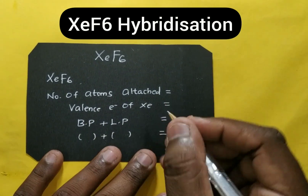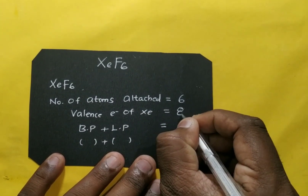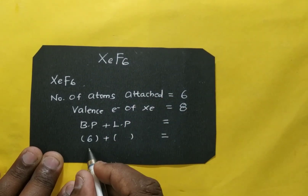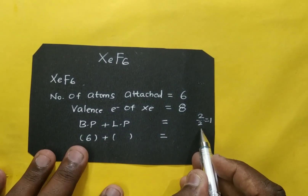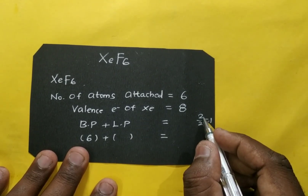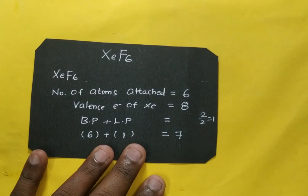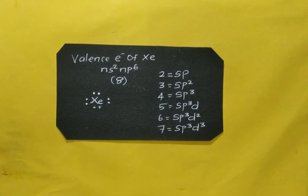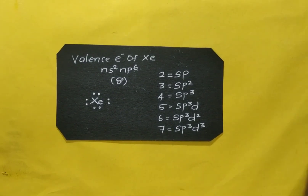For xenon hexafluoride (XeF₆): number of atoms directly attached is 6, so bond pair = 6. Valence electrons = 8; remaining = 8 − 6 = 2; lone pairs = 2 ÷ 2 = 1. Total = 6 + 1 = 7, so hybridization is sp³d³.